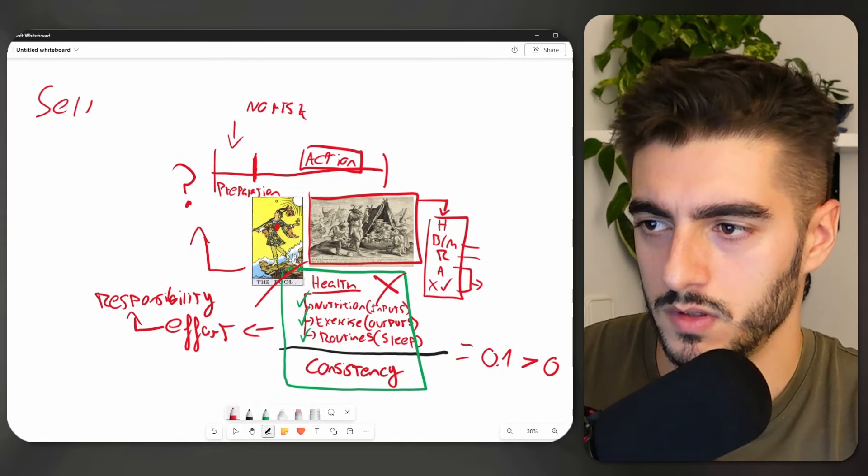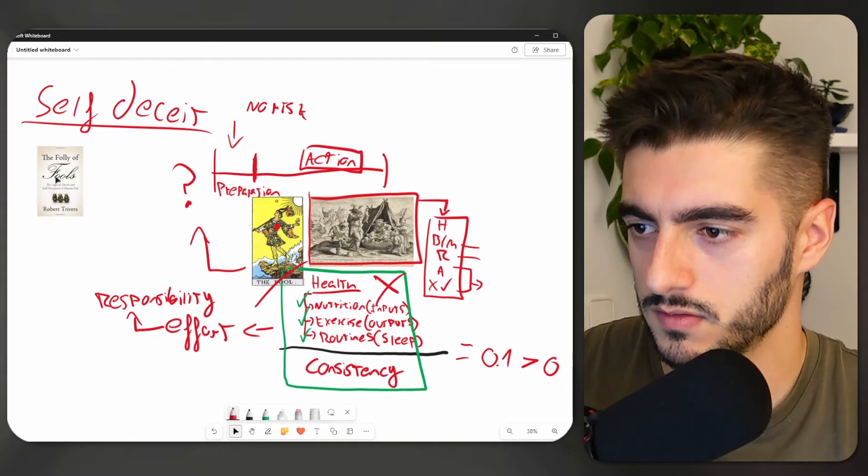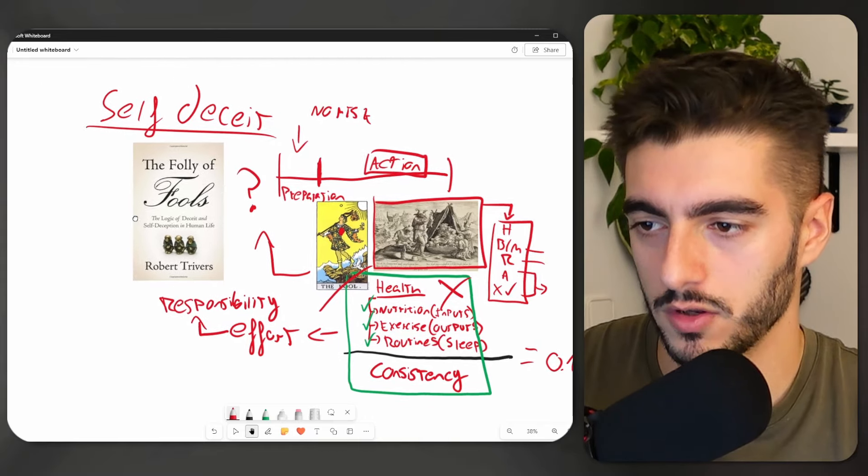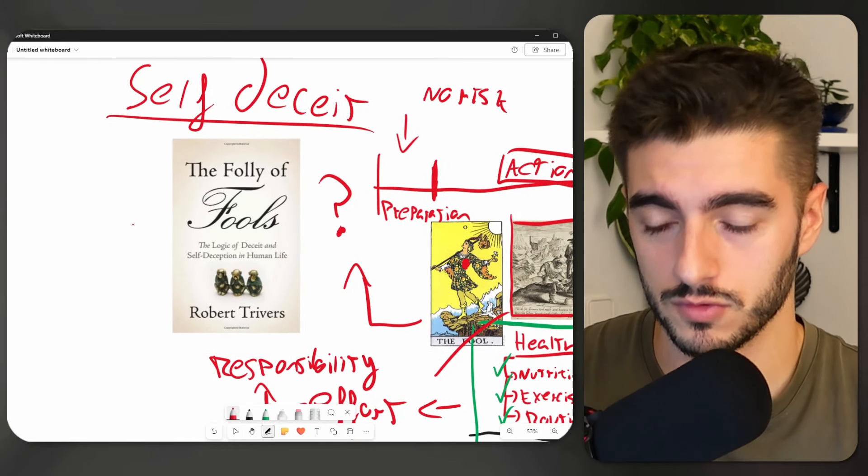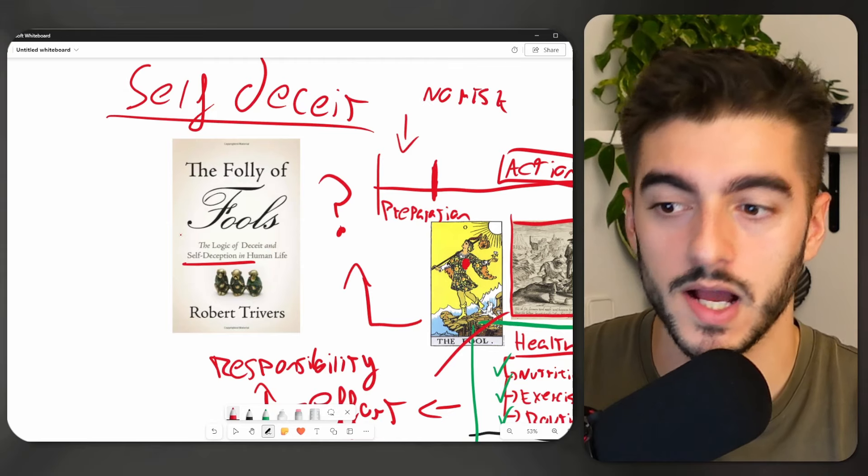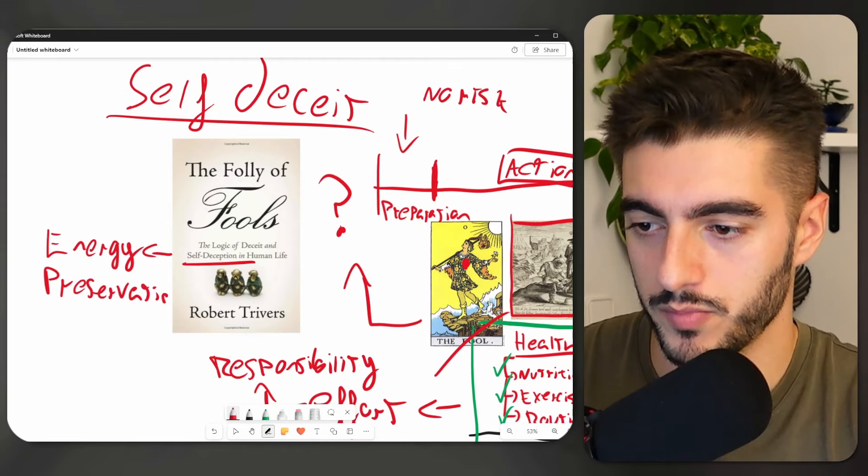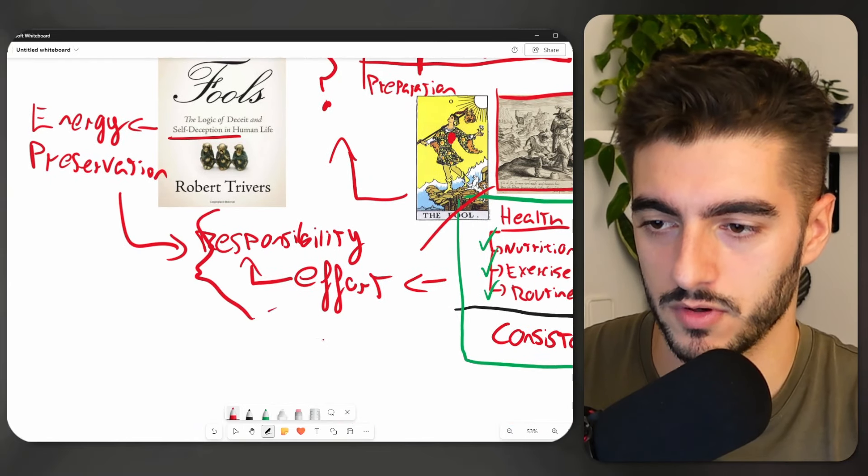So what all this trickery is, is self-deceit. And there's this very interesting book that talks about this, about how the brain can lie to itself without consciously knowing it. It's called The Folly of Fools. And it's quite an interesting phenomenon. I'll make a detailed video on this topic soon. So subscribe to the channel if you want to watch that. And self-deceit or self-deception can happen for many reasons. And one of them, I would say, happens for energy preservation and also avoiding responsibility and effort.